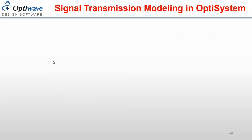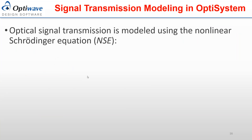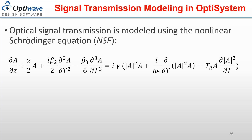The first transmission model is the nonlinear Schrödinger equation, which is a well-known equation. It has terms for attenuation, group loss, dispersion, third-order dispersion, and the nonlinear effect related to self-phase modulation. This equation is a single equation, so it only addresses self-phase modulation. For cross-phase modulation, we have coupled equations depending on the design. This part also includes self-steepening, and finally the Raman effects in the last term.